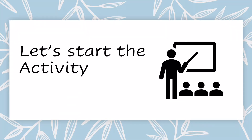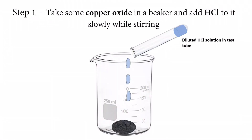Let's start the activity. First of all, we have to put a beaker and put our substance in it, which is called copper oxide — the dark-colored substance we have used in previous videos. On top of it we add diluted hydrochloric acid. We have started to put it in.